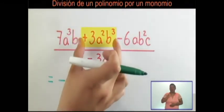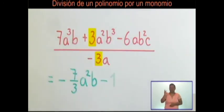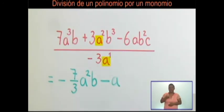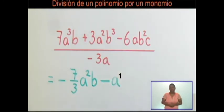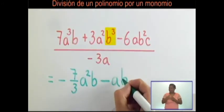Continuamos. Tomamos el segundo término del polinomio y lo dividimos por el monomio. Aplicamos ley de signos: más con menos es menos. Dividimos los coeficientes: 3 entre 3 = 1 (no es necesario escribir el coeficiente 1). Dividimos las variables: a al cuadrado entre a (exponente 1), restamos exponentes: 2 menos 1 = 1; como el exponente es 1 tampoco es necesario escribirlo. La b al cubo solo está en el numerador, se escribe igual: b al cubo.